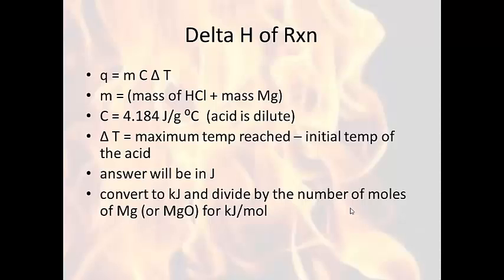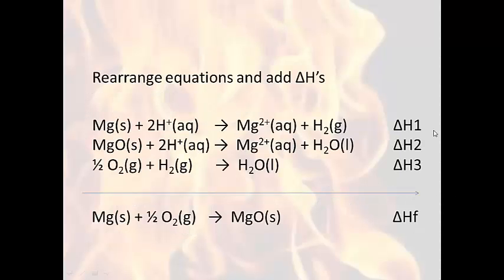Repeat this same process for all three trials and average them for your delta H of reaction for the first step. You'll repeat all of the same procedure for magnesium oxide, with two trials of the same mass, using the same calculations. Once you have your delta H for the first and second equations and you've looked up the final one, do your rearranging and multiplication as needed to satisfy Hess's law, and determine your delta H of formation of magnesium oxide.